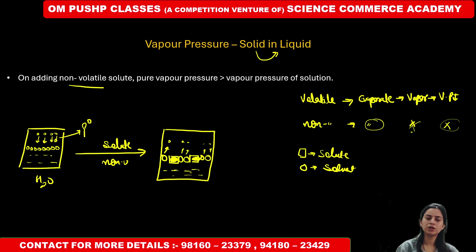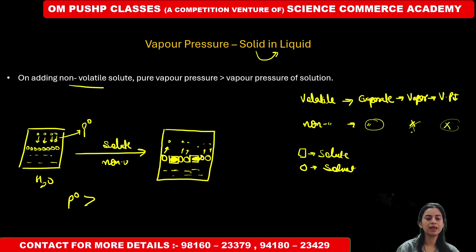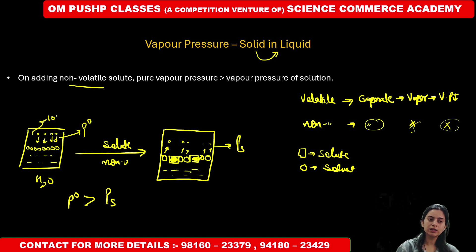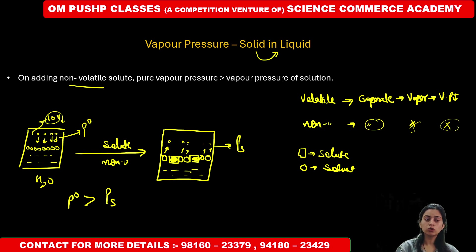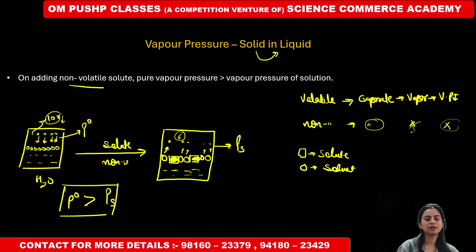So now, in the first layer — the surface layer — there will be non-volatile solute particles which will not become vapors. It is possible that we have only 6 moles of water present on the surface instead of 10, so only 6 vapors form. This is why P naught is greater than P solution.